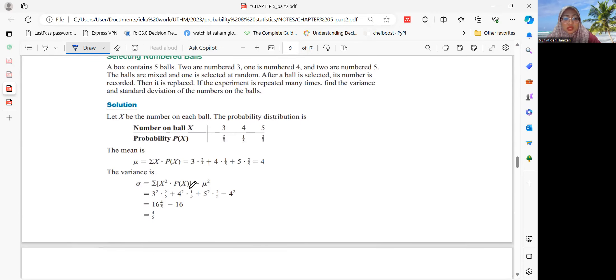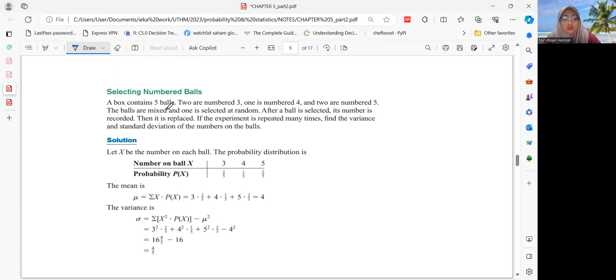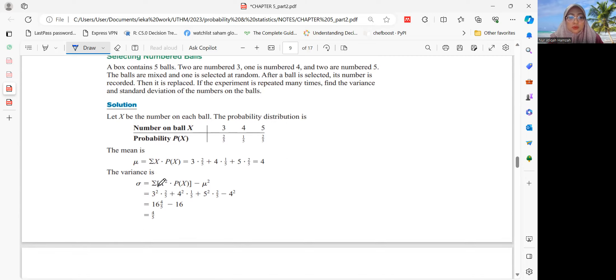Same for the example of selecting numbered balls. A box contains 5 balls. Two are numbered 3, one is numbered 4, and two are numbered 5. The balls are mixed and one is selected at random. So each one has different probabilities because number 3 has 2 balls, so probability of getting number 3 is 2 over 5. Number 4 only once, so 1 over 5. Number 5 has 2 balls, so 2 over 5. So we can see this is different from the previous example where probabilities were all the same.